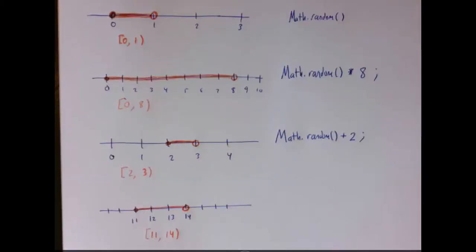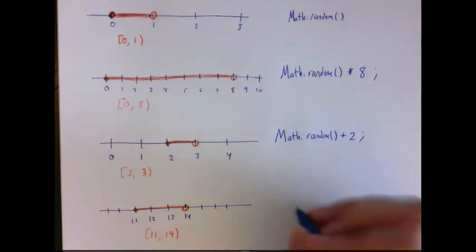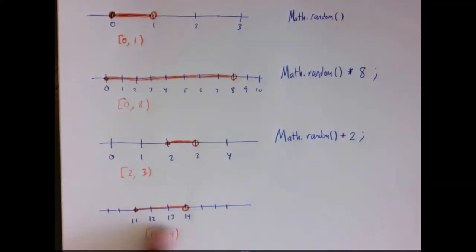So how would we construct an expression that would give us any arbitrary interval we want? So let's say we want a random number, a random double between 11 and 14. So you've got to use a combination of scaling and translating. So I know the minimum value I want is 11, and I know that the length of the interval I'm interested in is a length of 3.